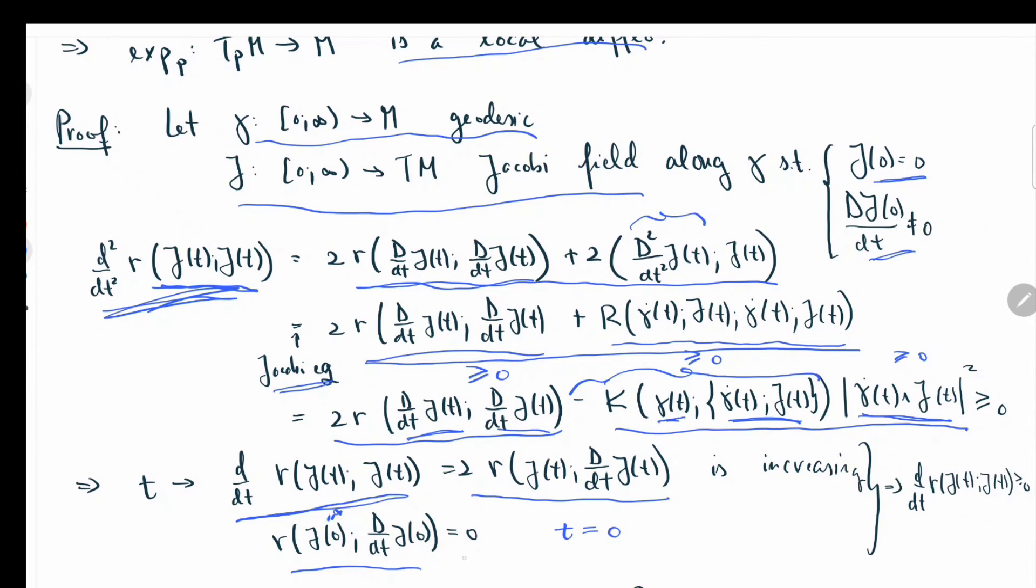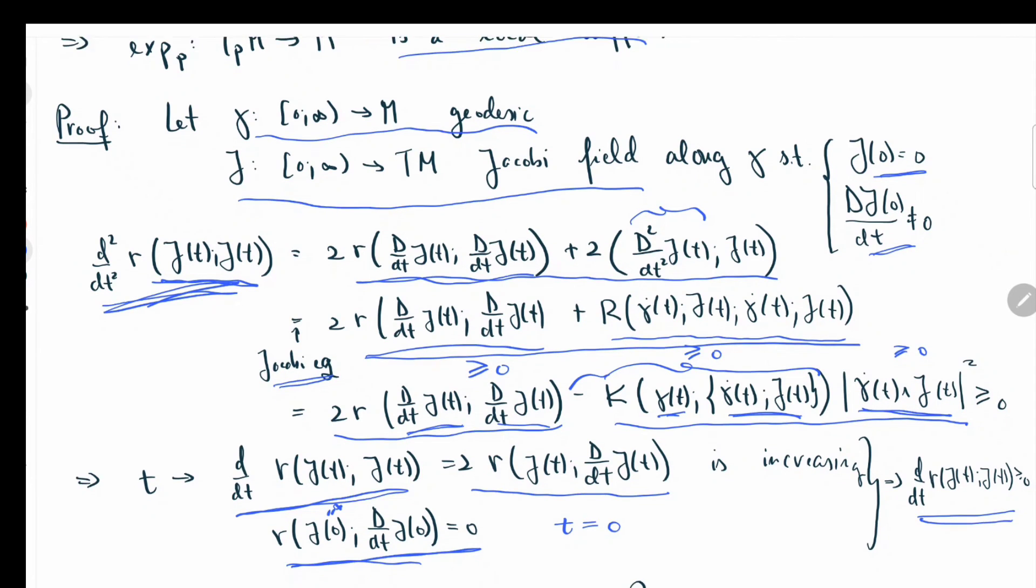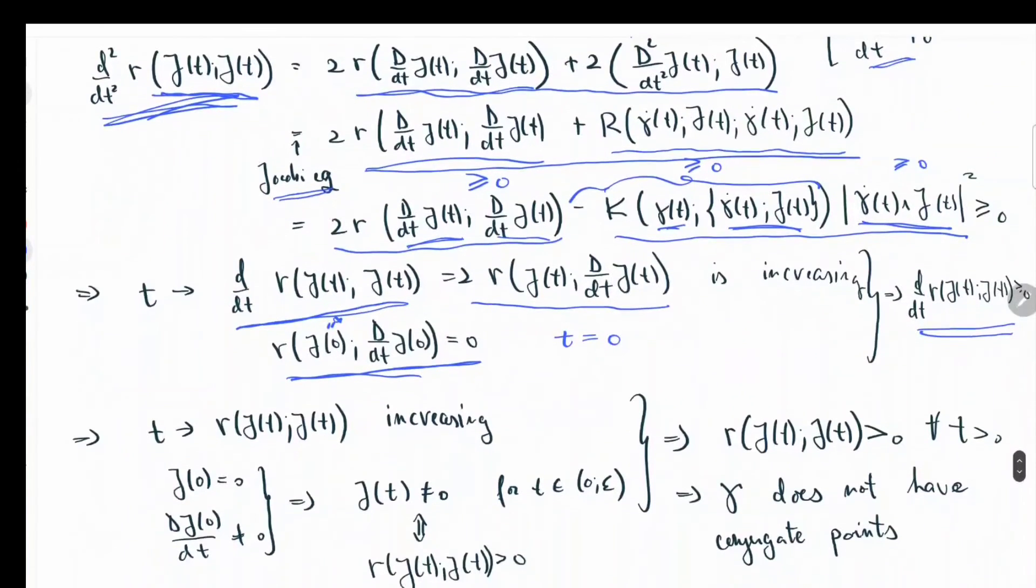And since j(0) equals 0, then this expression equals 0. So if this function is 0 at 0 and otherwise increasing, then that means it has to be non-negative.